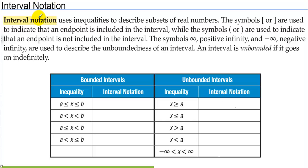Interval notation. Interval notation uses inequalities to describe subsets of real numbers. Brackets are used to indicate that the endpoint is included in the interval, while parentheses are used to indicate that an endpoint is not included. The symbols positive infinity and negative infinity are used to describe the unboundedness of an interval. An interval is unbounded if it goes on indefinitely.